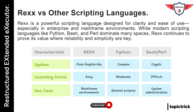Compare that with something like Perl. Perl is powerful, no doubt, but it can also look like alphabet soup. It's packed with symbols and shorthand that can be hard to follow, especially if you're revisiting your code weeks later.